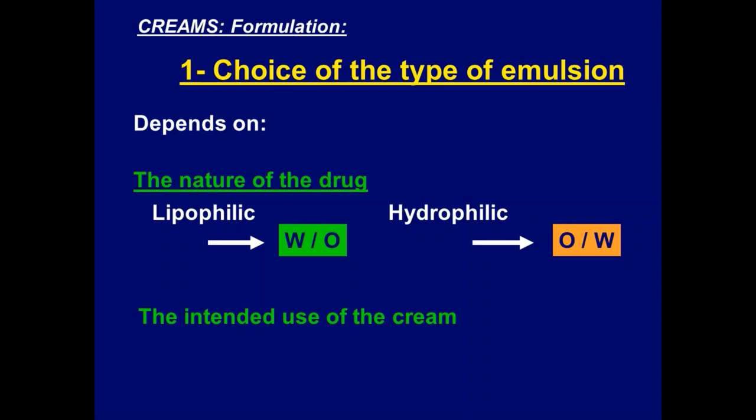So the external phase acts as a solubilizer for the drug. Why do we add an internal phase at all? If you use a solution of a lipophilic drug in oil, this is a liquid dosage form, and liquid dosage forms have poor retention on the skin. To increase the viscosity of the solution, you disperse small droplets of water in it and form an emulsion. The same rationale applies to hydrophilic drugs — you disperse small droplets of oil as the internal phase to increase viscosity and achieve a semi-solid form.